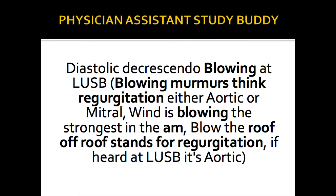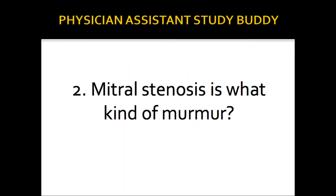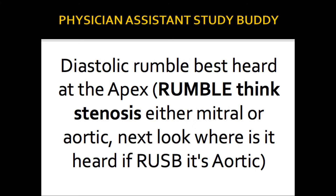Aortic regurgitation is a diastolic decrescendo blowing murmur — keyword: blowing — heard at the left upper sternal border. I remember blowing murmurs by thinking of regurgitation, either aortic or mitral. I say the wind blows the strongest in the AM — A for aortic, M for mitral — and to 'blow the roof off,' where the roof stands for regurgitation.